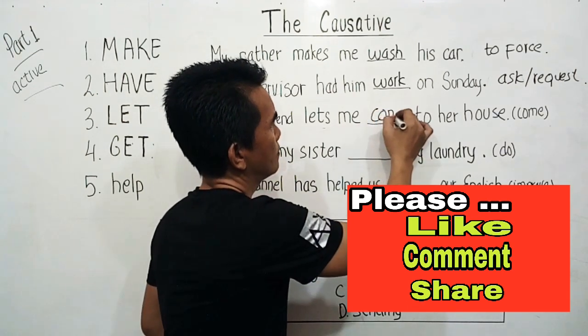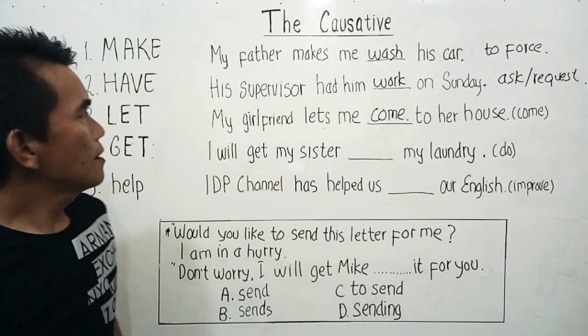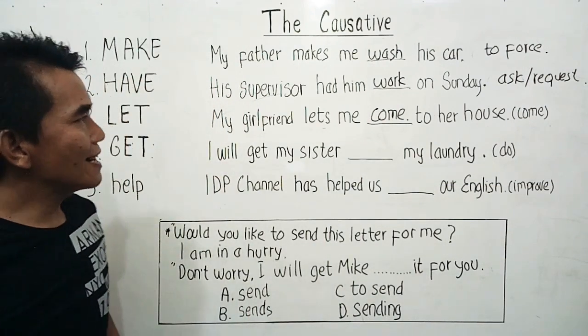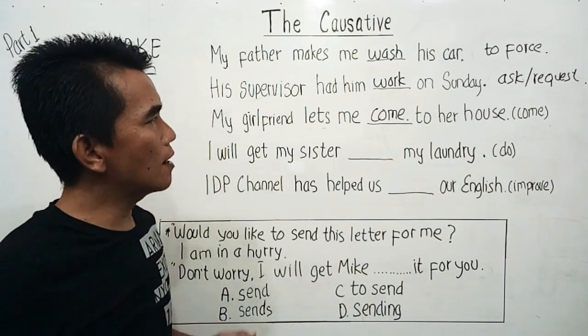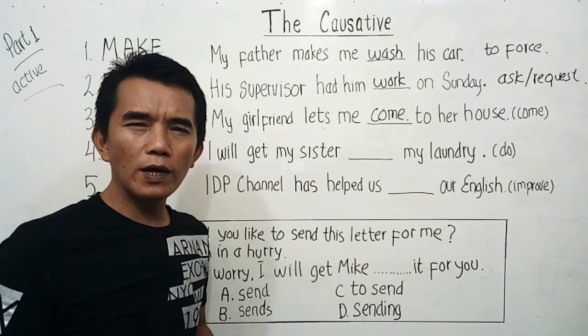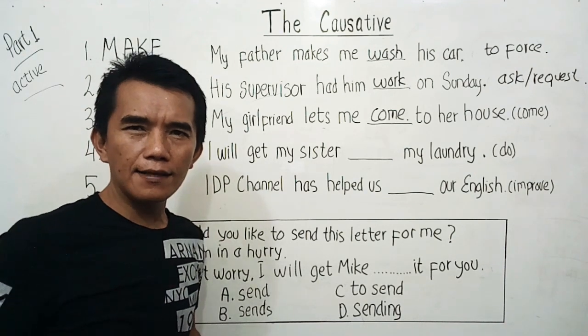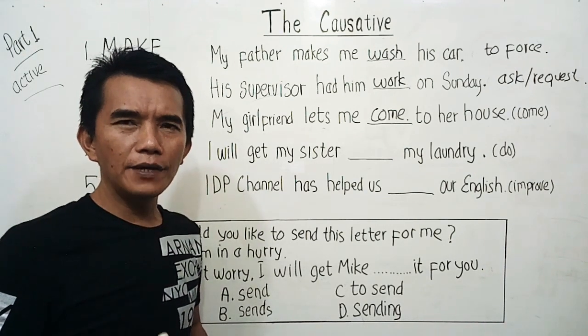So the answer is: 'My girlfriend lets me come to her house.' When someone lets us do something, it means they give us permission to do something or they allow us to do something.